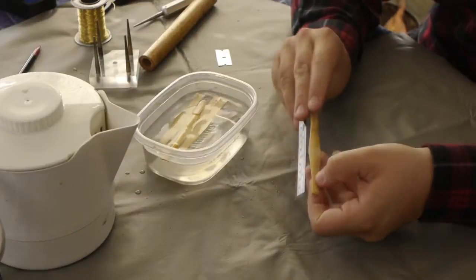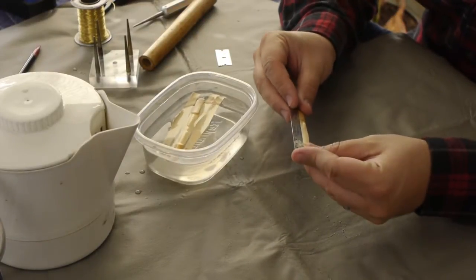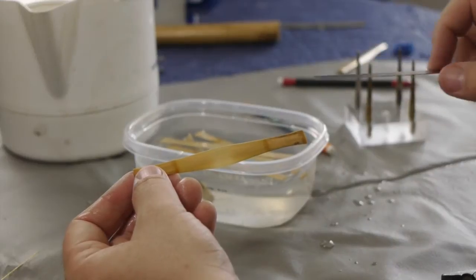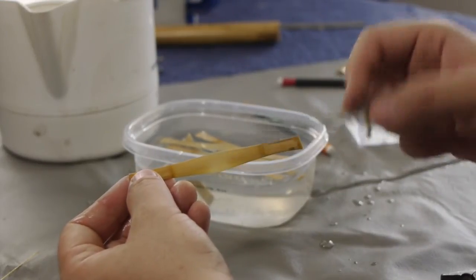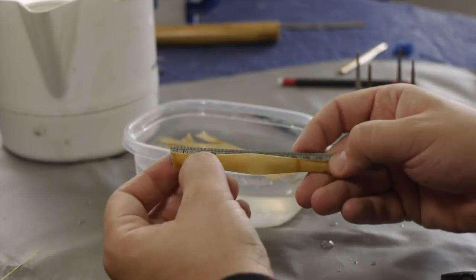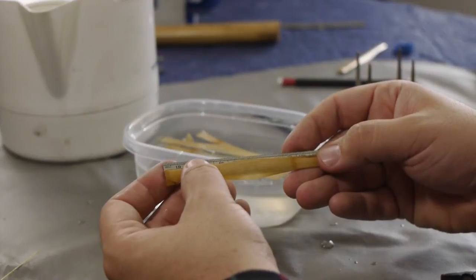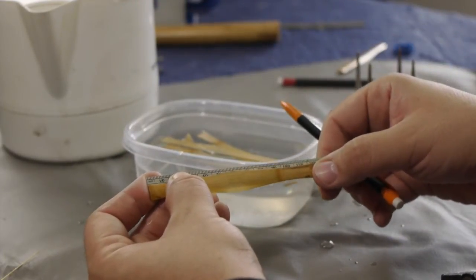The next thing we need to do is find the absolute center of the cane. Sometimes when we buy gouge-shaped and profiled cane, there'll be a line in the center that you can see really clearly. In this case, there's not. So if I measure this piece of cane, it's a pretty common length. It's exactly 120 millimeters in length.